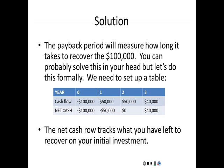The first row is the project cash flows across year 0, 1, 2, and 3. So we have our $100,000 investment at time 0, then our $50,000 cash flow in year 1 and year 2, and then our $40,000 cash flow at year 3.